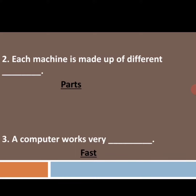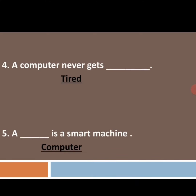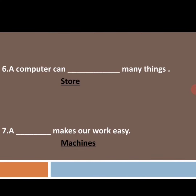Third one: a computer works very ___. A computer works very fast, so make the tick mark for fast. Next, the fourth one: a computer never gets ___. A computer never gets tired, so make the tick mark for tired. And the fifth one: a ___ is a smart machine. A computer is a smart machine, so make the tick mark for computer.